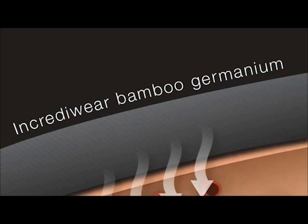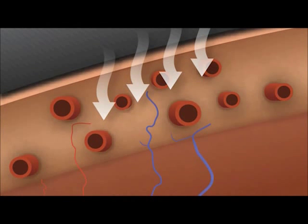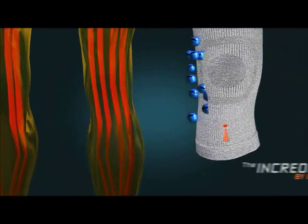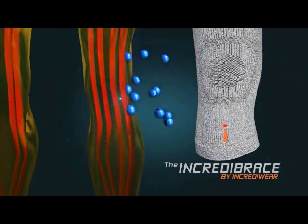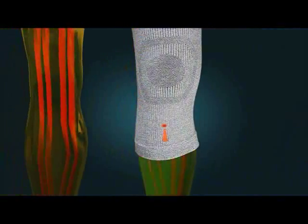Your body heat quickly starts to energize the unique nanobamboo charcoal and germanium fibers into releasing negative ions that flow through the body and vibrate cellular walls.